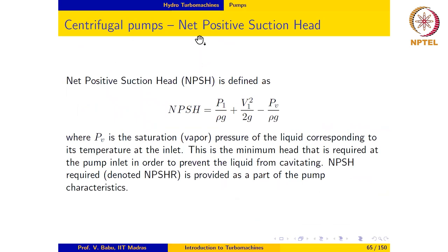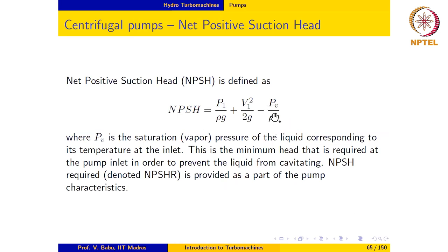The next concept to discuss is the so-called Net Positive Suction Head (NPSH). It is defined as: NPSH = P1/(rho·g) + V1²/(2g) − P_V/(rho·g), where P_V is the saturation or vapor pressure of the liquid corresponding to its temperature at the inlet. Notice that if you are pumping a hot liquid, the vapor pressure increases with temperature, so P_V will be higher than the corresponding value at room temperature.